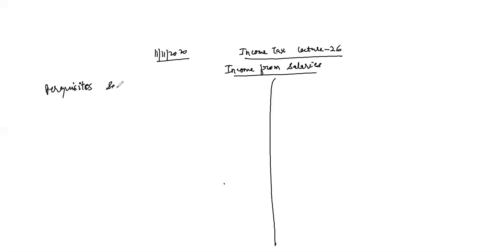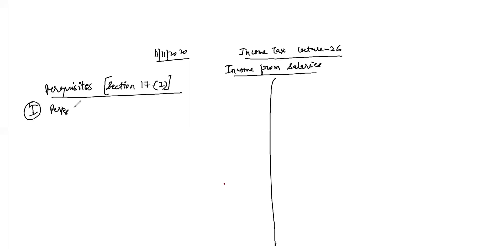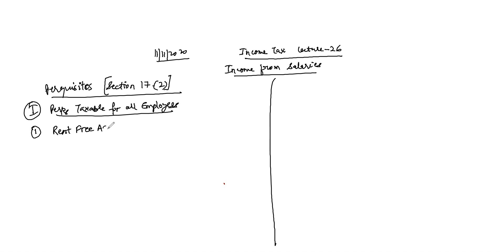Perquisites, Section 17.2 — we were discussing the first category of perks, taxable for all employees. In which we are doing first rent-free accommodation, where your employer provides you a home to stay. We have done our calculations and numerical problems.